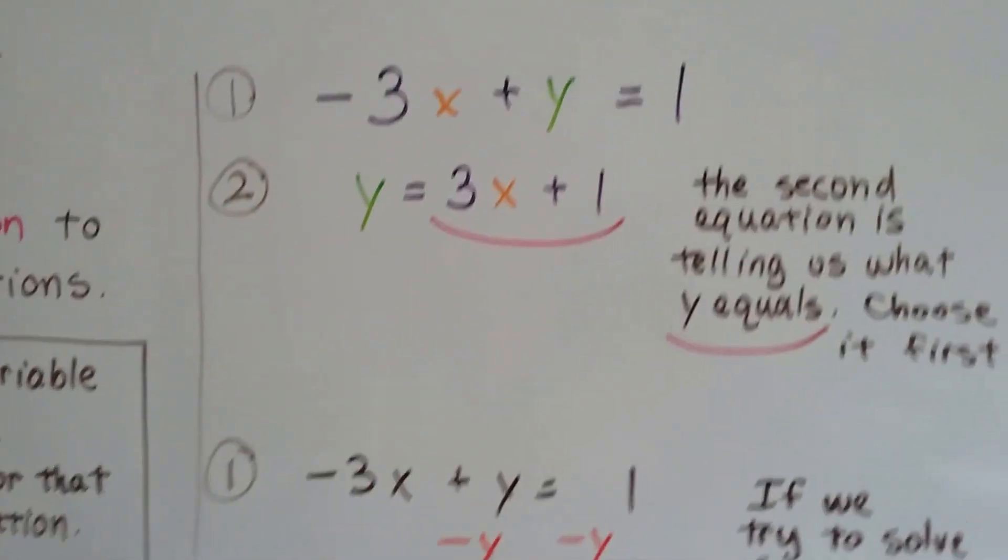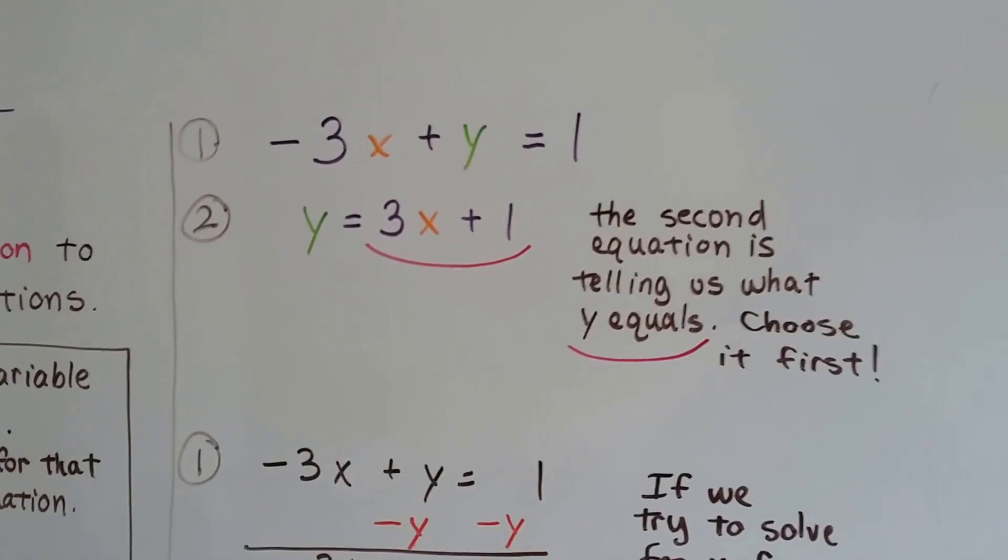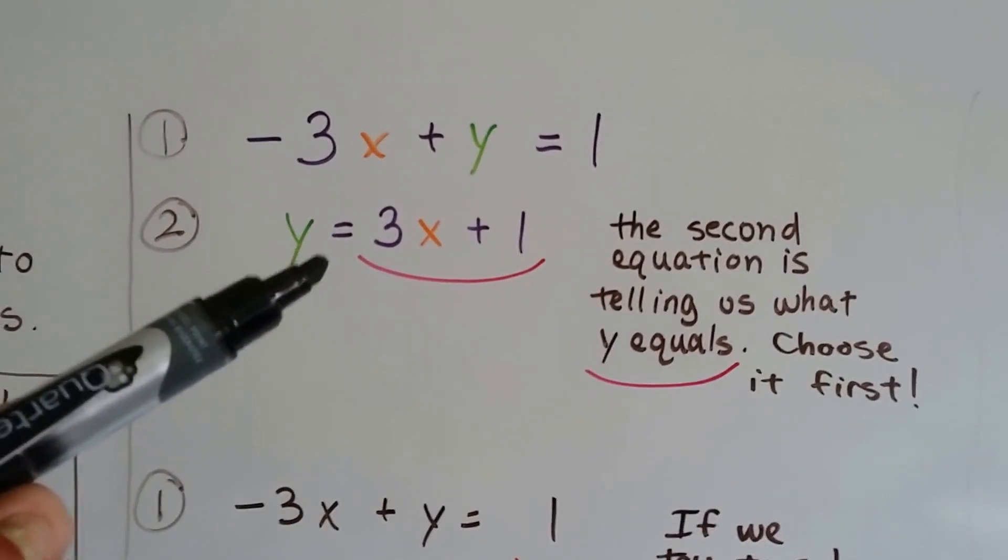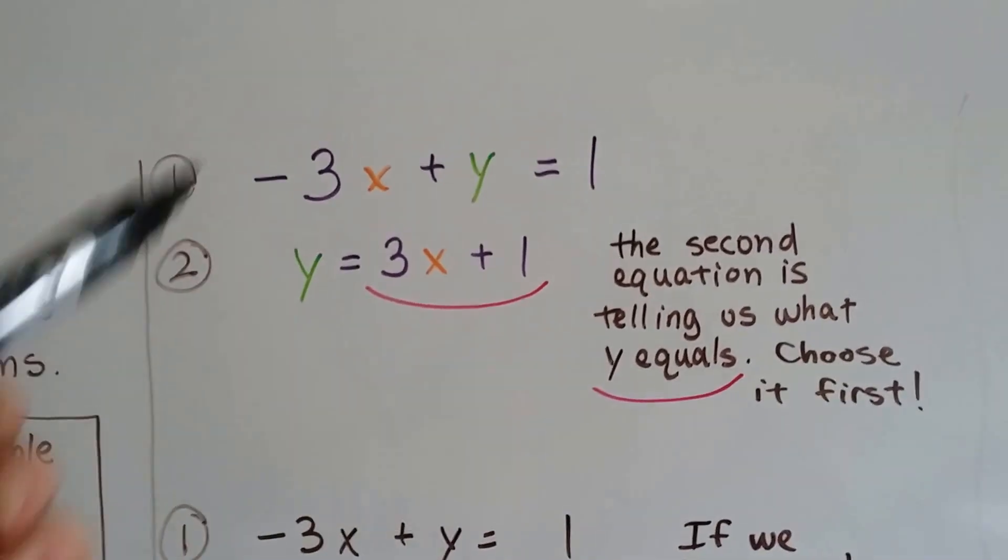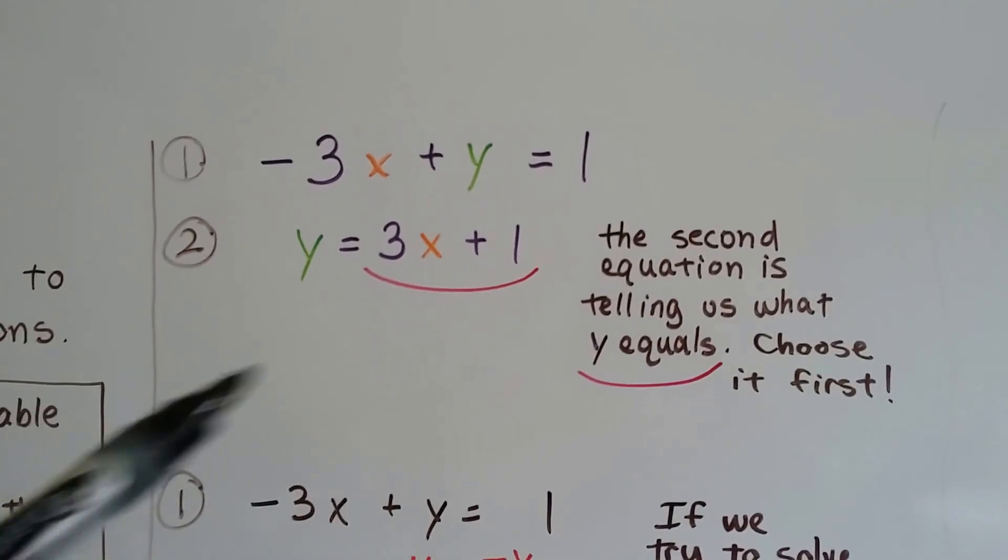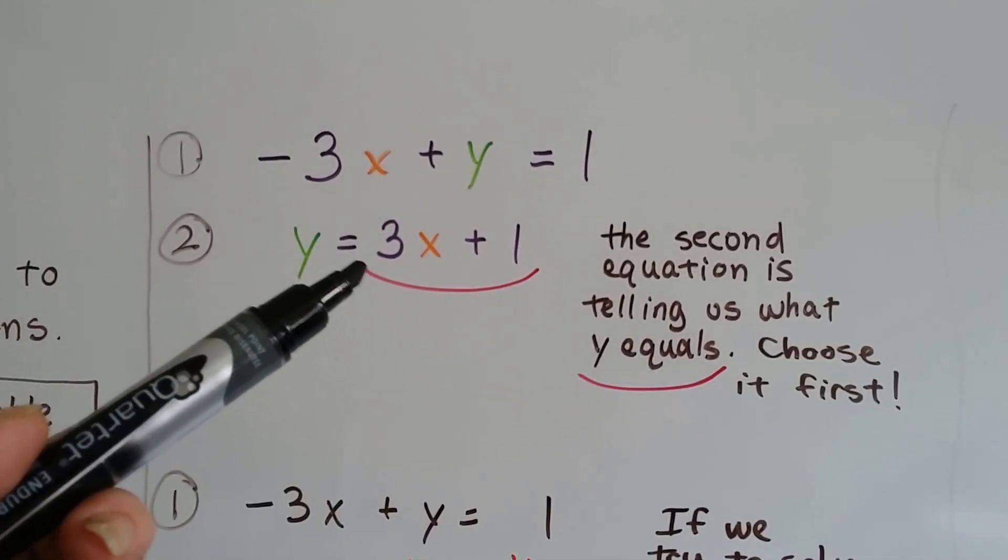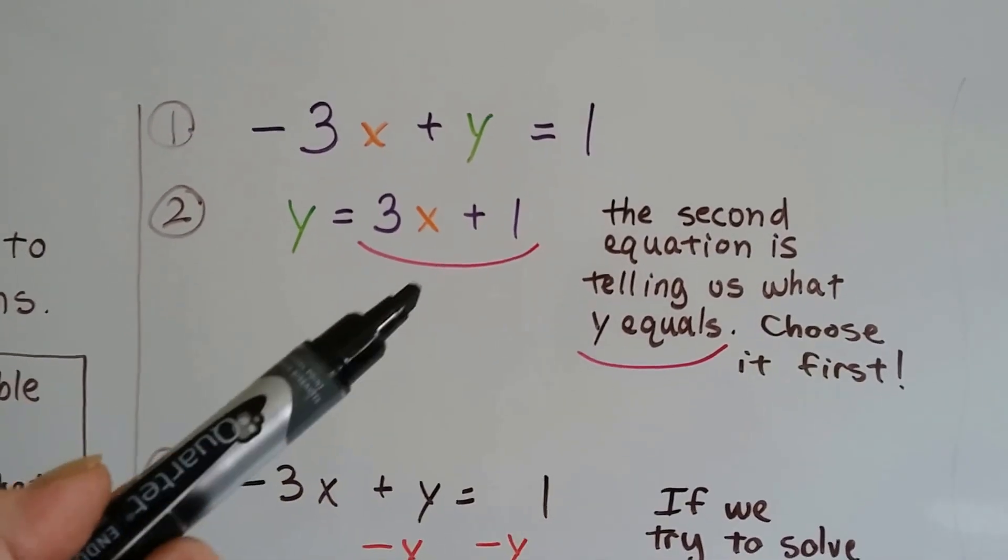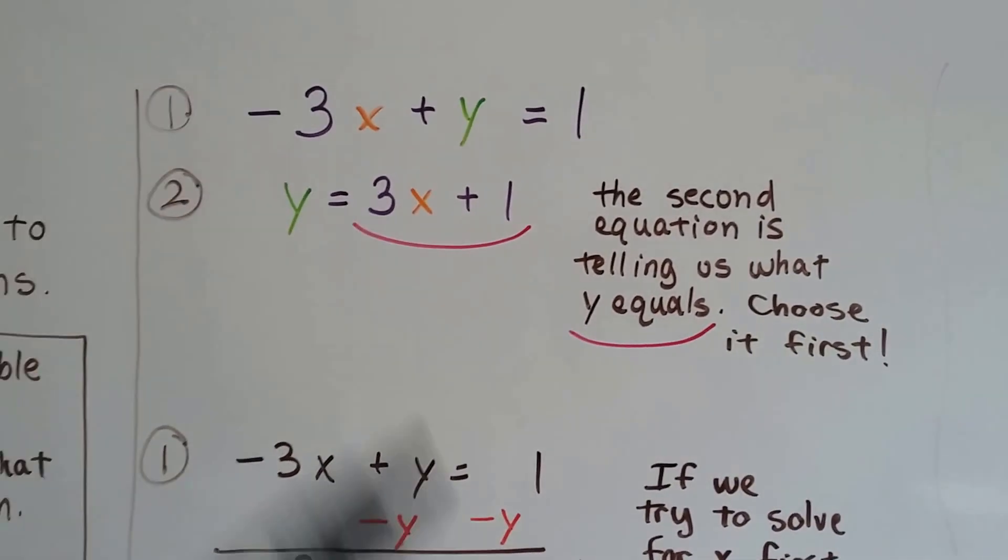But how do you know which equation to choose first? For that one it made sense because it said y equals. Well, so does this one. We used this system of equations, these two equations, in our last video. And I chose this one first because it already told me that y equaled 3x plus 1. Well, what would have happened if we didn't choose it first?